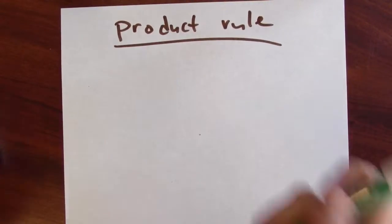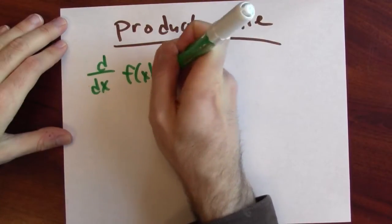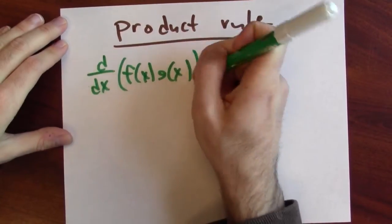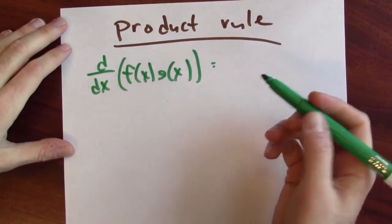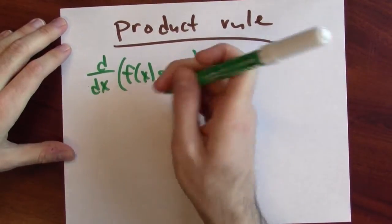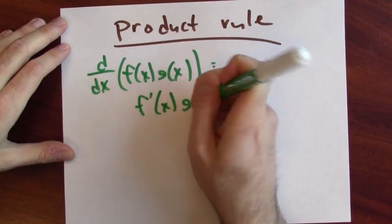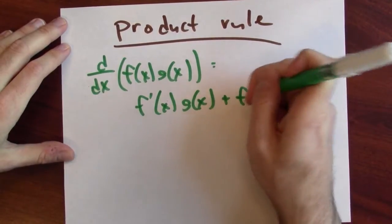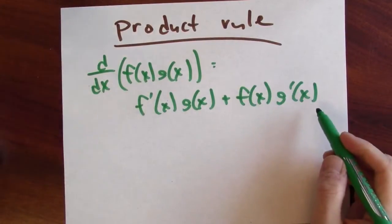Now we're going to run the product rule in reverse. The product rule tells us how to differentiate a product of two functions. Here are two functions, f and g, and if I want to differentiate their product using the product rule, the derivative of the product is the derivative of the first times the second plus the first times the derivative of the second. Now integrate both sides.